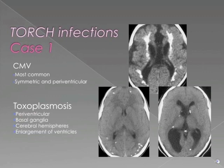Toxoplasmosis results in enlargement of the posterior aspects of the lateral ventricles. This enlargement of the posterior lateral ventricles is described as colpocephaly-like. Colpocephaly is a term that is generally used to describe the appearance of the lateral ventricles in cases of agenesis of the corpus callosum.